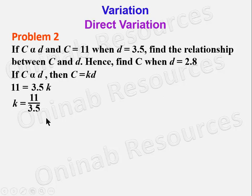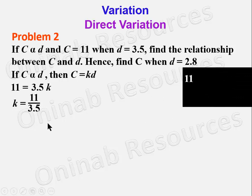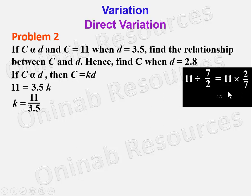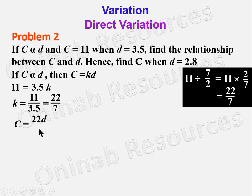We simplify K = 11 over 3.5: 11 divided by 3.5 is the same as 11 divided by 7 over 2, which gives 11 times 2 over 7. We cannot simplify further, so K equals 22 over 7. We now find the relationship between C and D by substituting K: C is equal to 22D over 7.